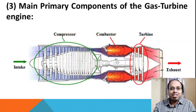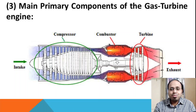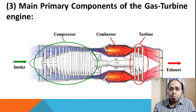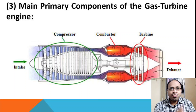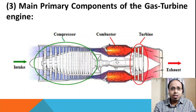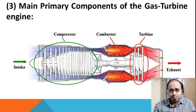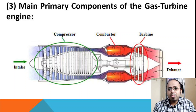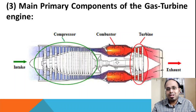You can see here I've mentioned a schematic diagram of the gas turbine engine in which you can find all five primary components. The first is the intake (diffuser), second is the compressor, third is the combustion chamber (also called combustor), fourth is the turbine, and the last is the nozzle, also called the exhaust.